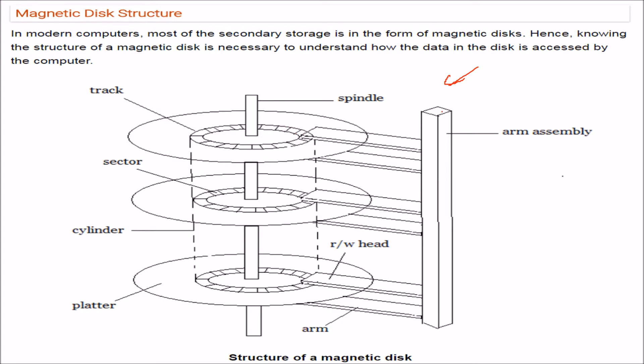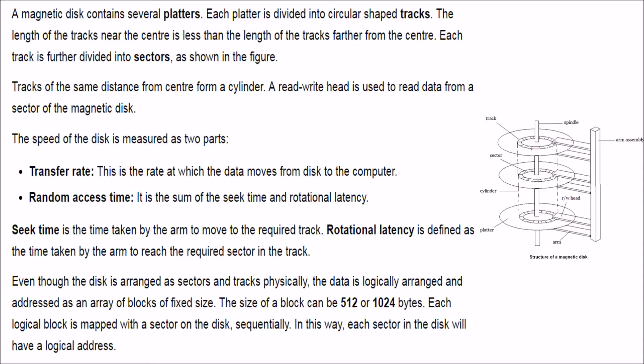There is an arm assembly, this is a spindle around which the disk moves. Then this arm assembly has a reader. This is the track and there are a number of tracks, and in one track there can be various sectors. This sector will keep or will have the data. One of these virtual is the cylinder and this is known as the platter. These are the arms, this is the write head. This is a general structure of magnetic disk.